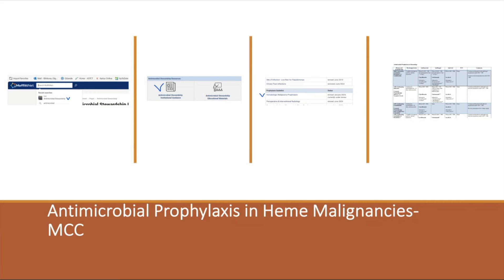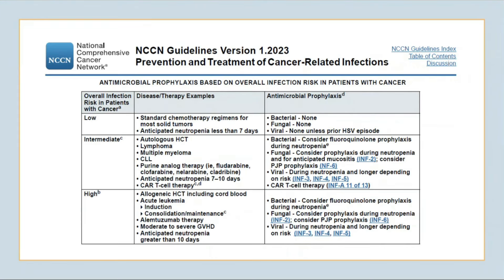The NCCN guidelines table from 2023 is very concise and goes over necessary prophylaxis for patients that are low risk, intermediate, and high risk. Just a couple of take-home points: when evaluating a patient with heme malignancy about to start treatment, think about the depth and duration of neutropenia based on the treatment or conditioning regimen chosen.